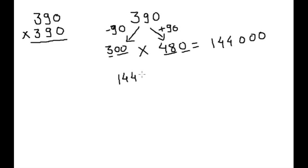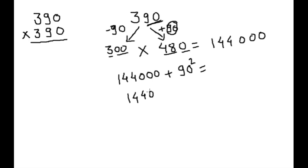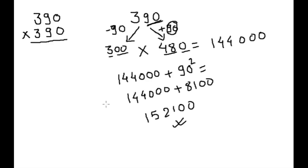Now 144000 plus 90 squared — the last 2 digits. 90 squared is very easy: it is 8100. So 144000 plus 8100 — square of 90 is 81 followed by 00 — giving 152100. This is the answer for the square of 390.